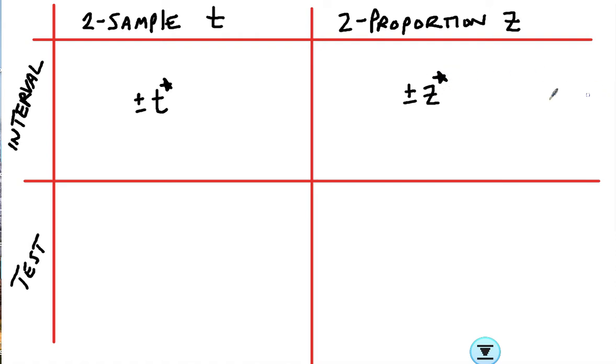I'm going to try to color code this and see if it helps. For two-sample, we're dealing with means. So we would be looking at the difference between two means, x̄₁ - x̄₂. If it's proportions, it would be p̂₁ - p̂₂.